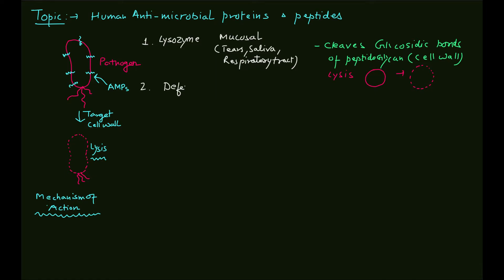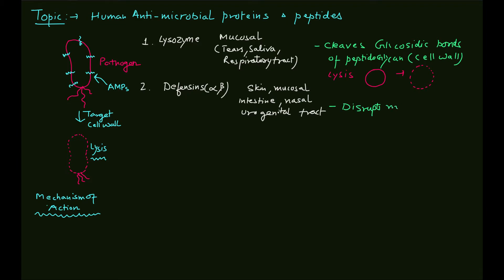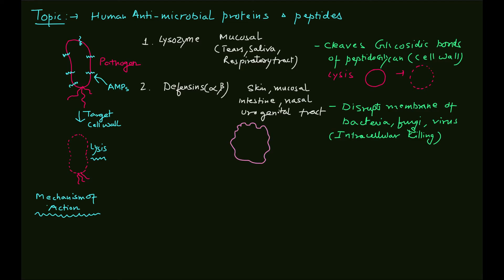Second are the defensins — defensin alpha and defensin beta. They are present in skin, mucosal surfaces, intestine, nasal tract, and urogenital tract. Their important role is to kill bacteria, fungi, and viruses. Specifically, they disrupt the membrane of bacterial cells, fungi, and viruses, and also cause intracellular killing of pathogens hidden inside host cells.